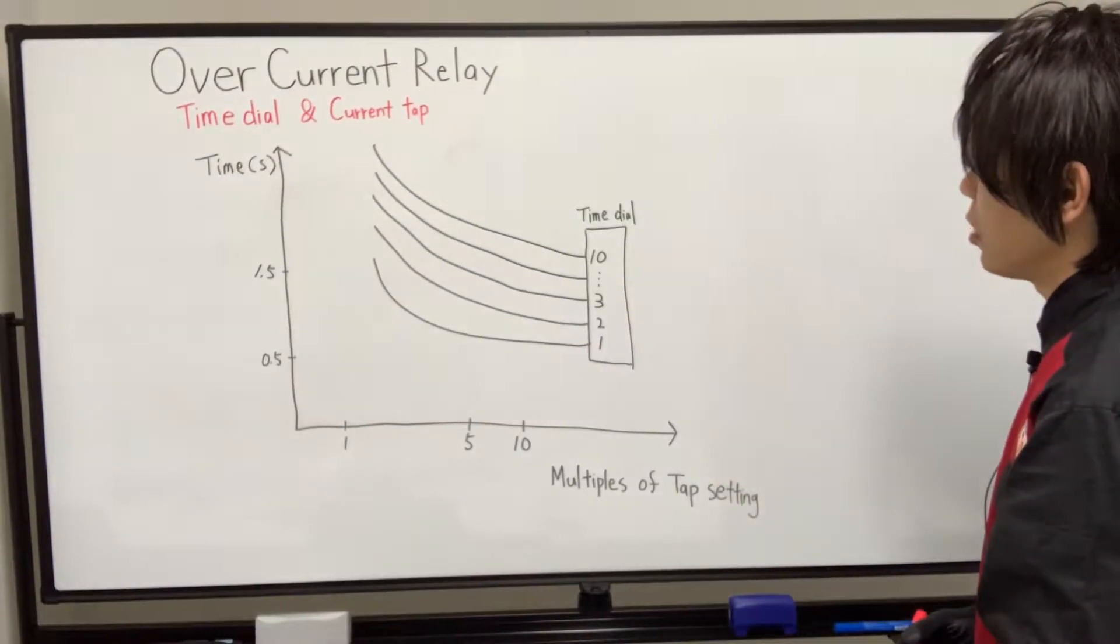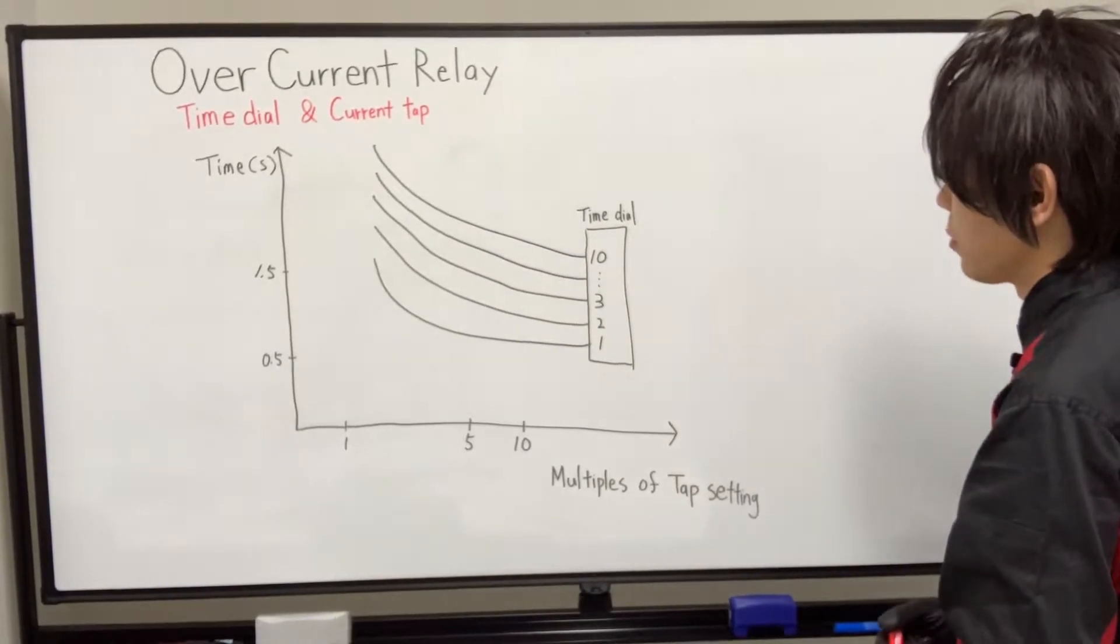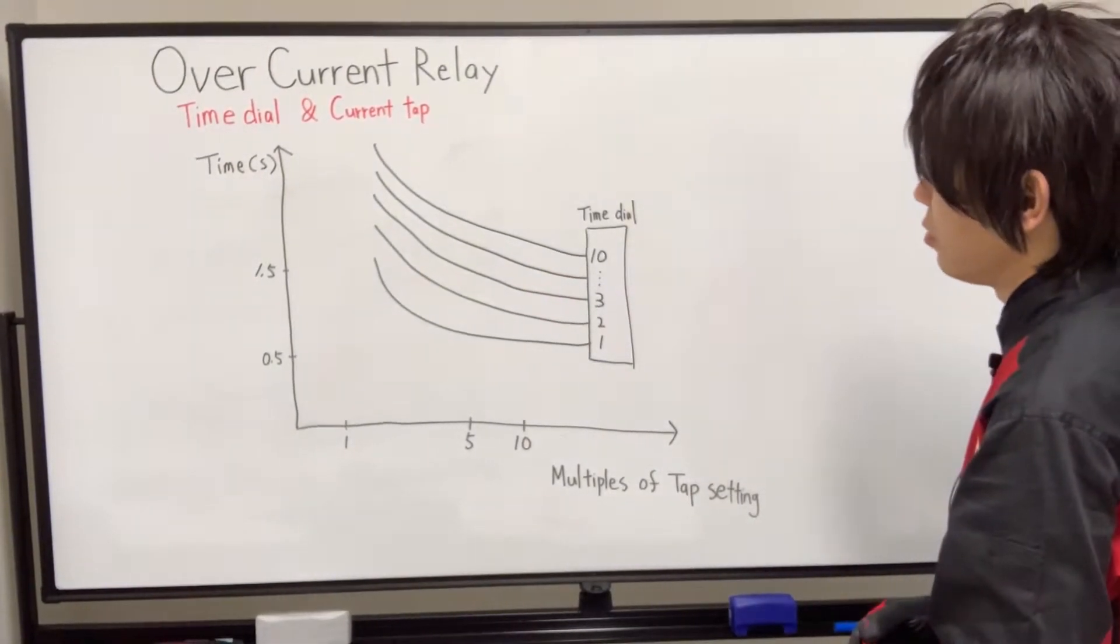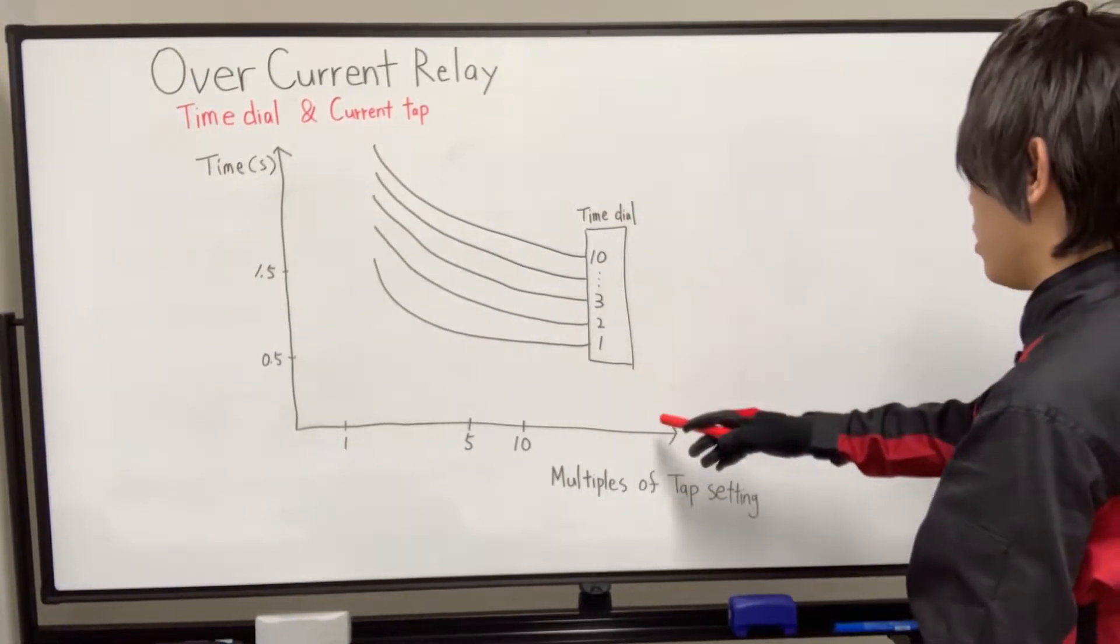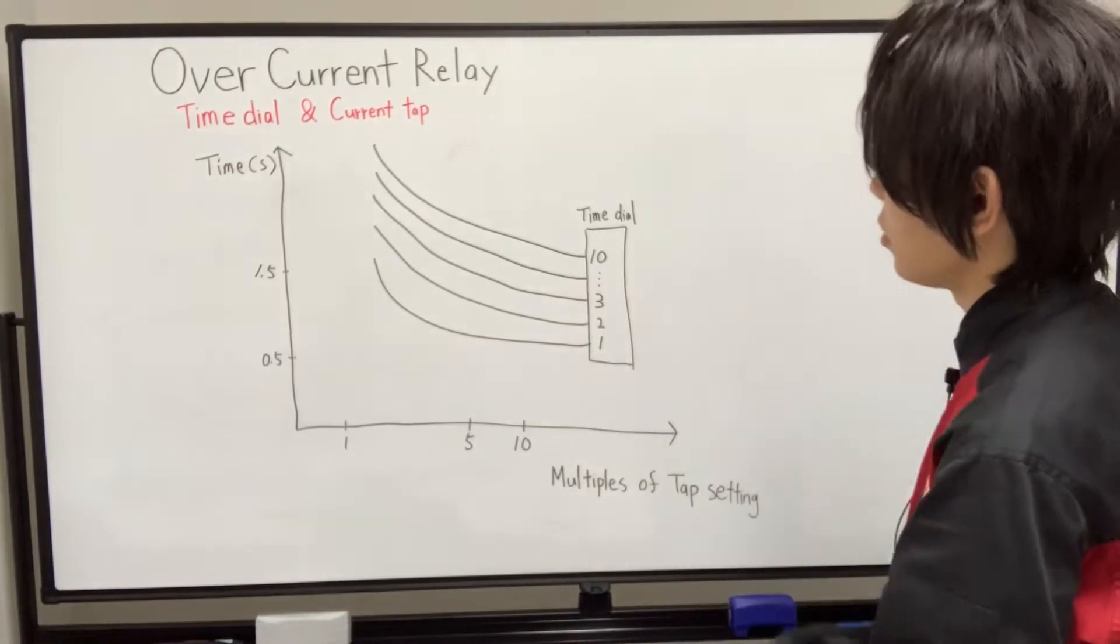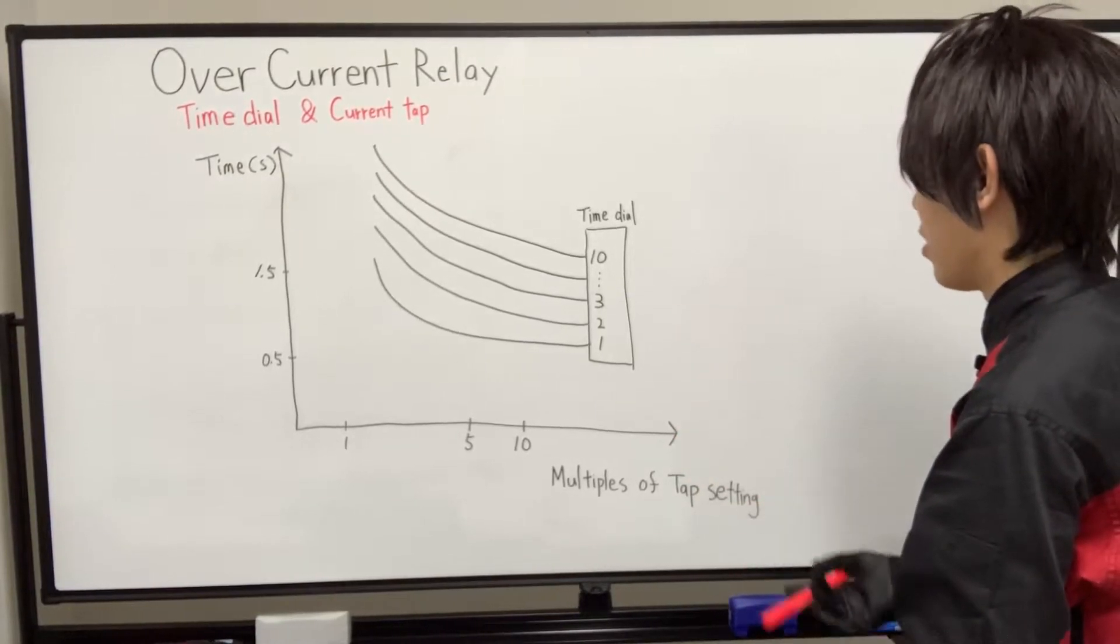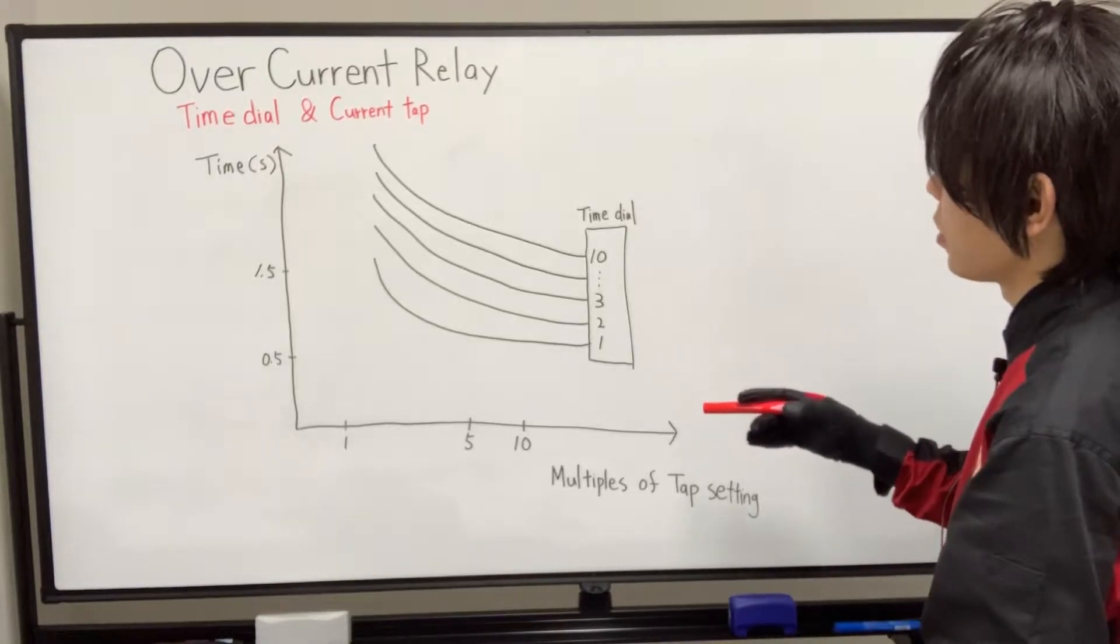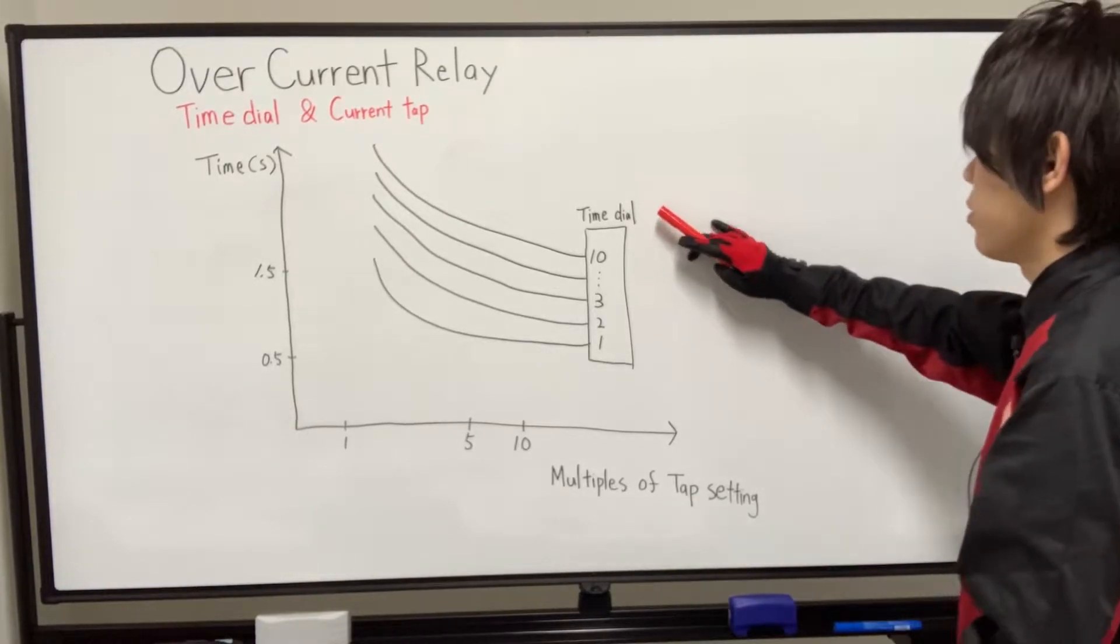These are well-known inverse time characteristics shown as this family of curves. The time for overcurrent relay's contact closure is shown on the vertical axis. The higher the level of fault current, the quicker the operation of the relay. Moreover, at any particular current level, we can adjust the operating time by adjusting the time dial.